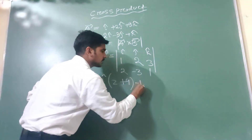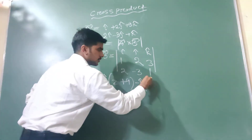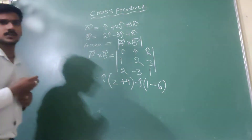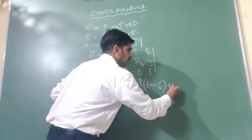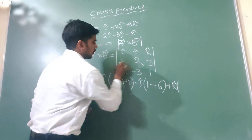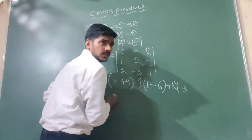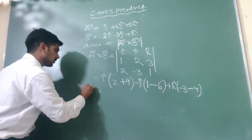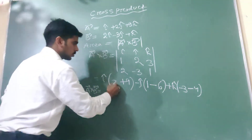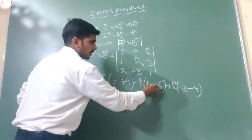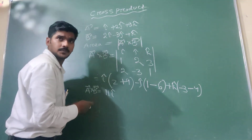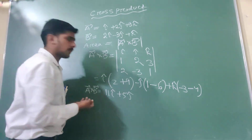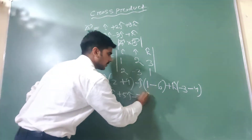Then minus J cap: value is 1 into 3 minus 2 into 3, which is 1 minus 6 equals minus 5, so plus 5 J cap. Then plus K cap: 1 into minus 3 minus 2 into 2 equals minus 3 minus 4 equals minus 7. So A vector cross B vector equals 11 I cap plus 5 J cap minus 7 K cap.